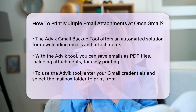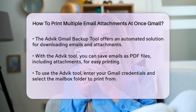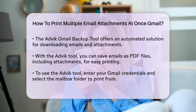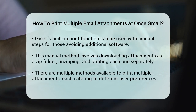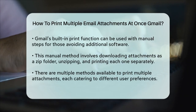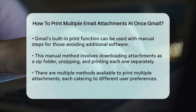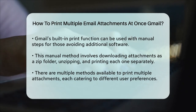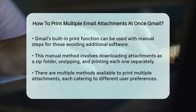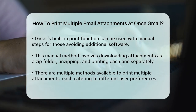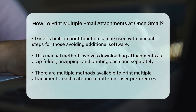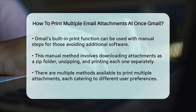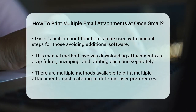If you're looking for a method that doesn't require any additional software, you can use Gmail's built-in print function along with some manual steps. Open the email with attachments, download all the attachments as a zip folder, unzip it, and then print each attachment separately. This method is a bit more tedious, but works if you don't want to use any extensions or software.